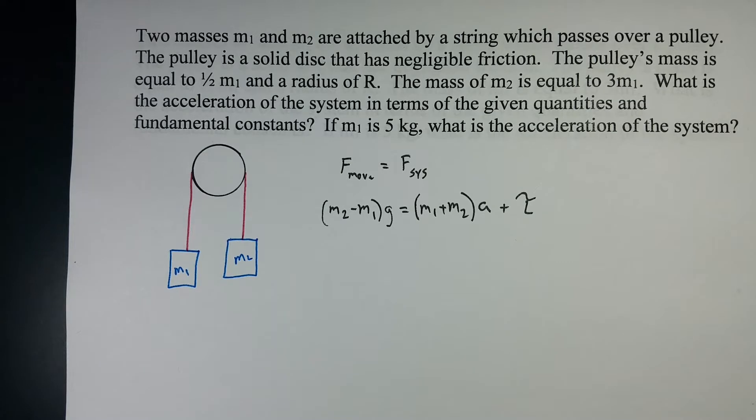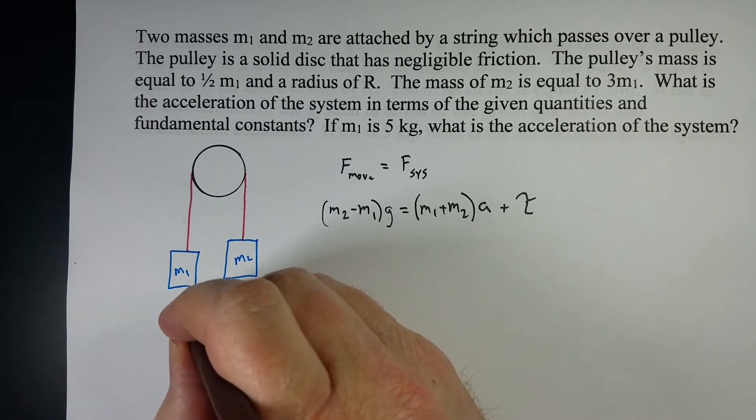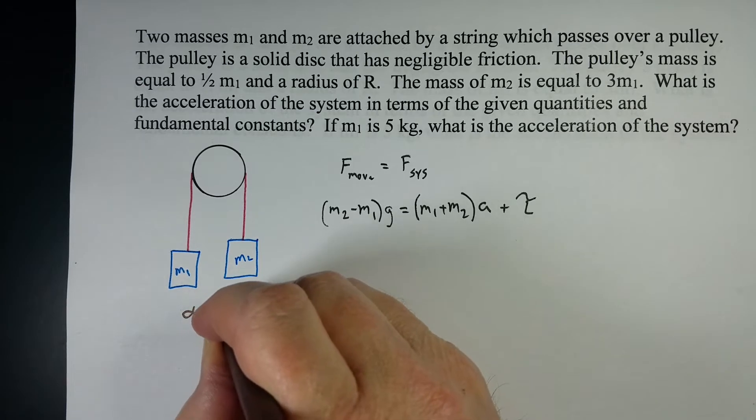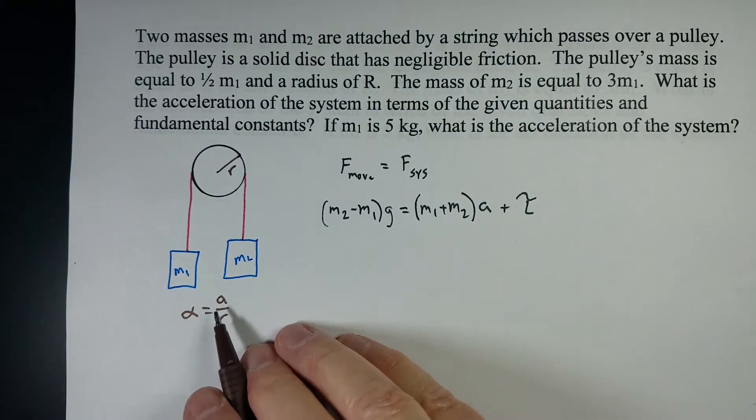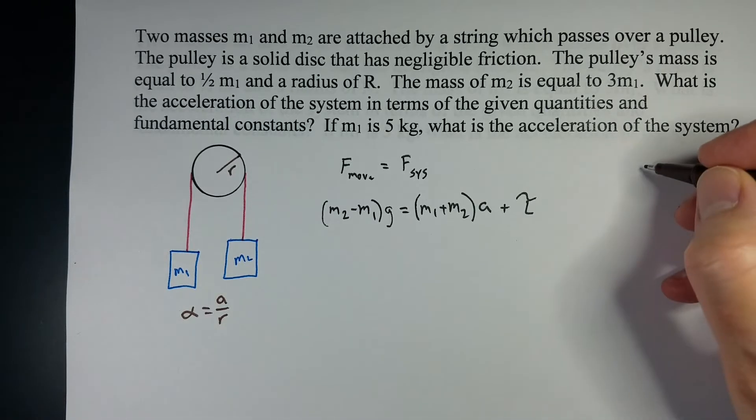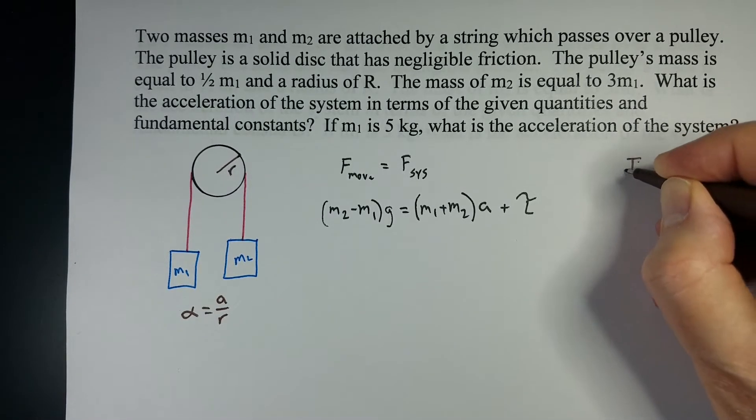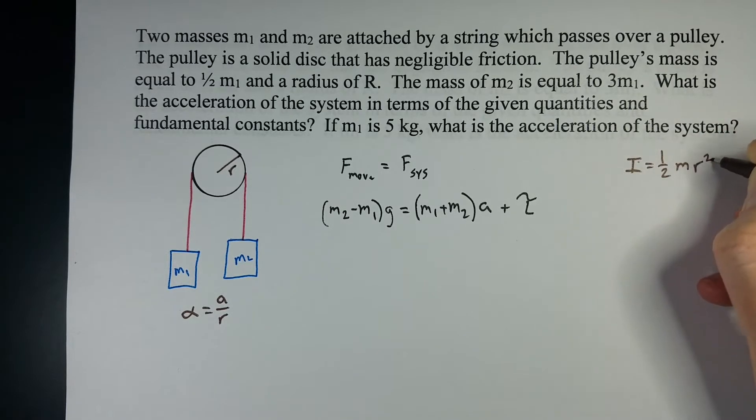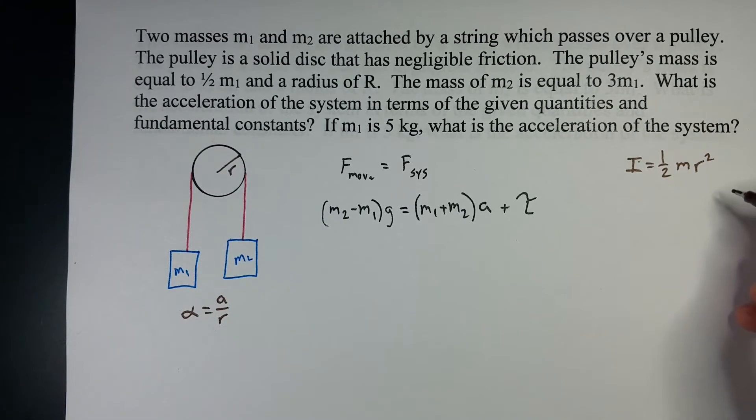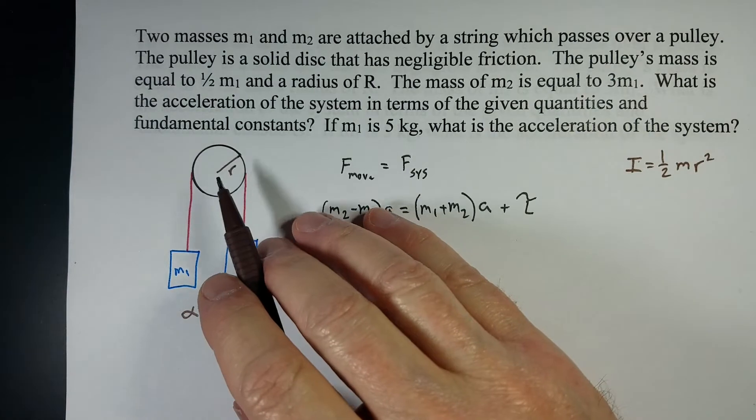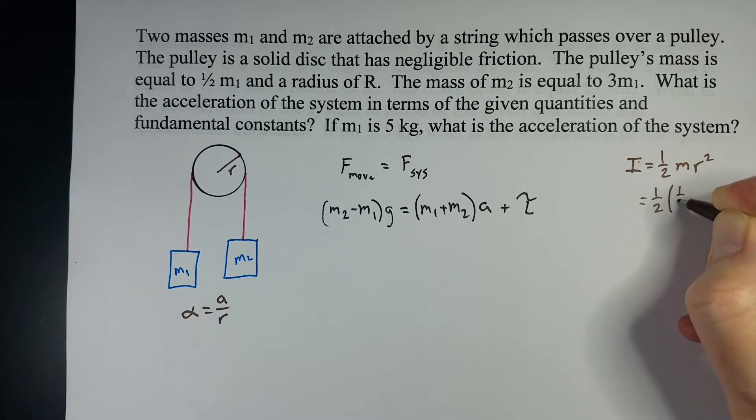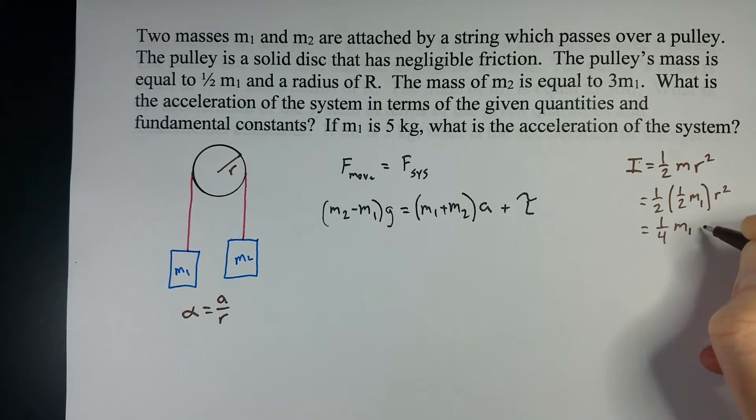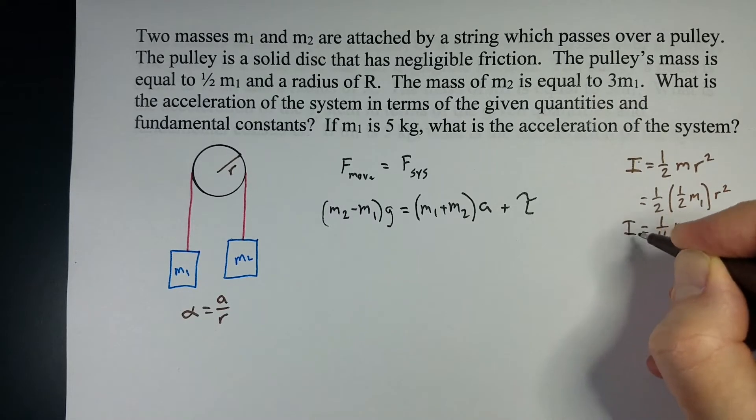We've got a couple of things that we could do. First of all, angular acceleration is equal to A over R, where R is the radius of our pulley. The moment of inertia for a disk is one-half MR squared. We know the mass of our disk is actually one-half of M1, so that's one-half of one-half of M1 R squared, which is one-fourth M1 R squared. That's our moment of inertia for the pulley.